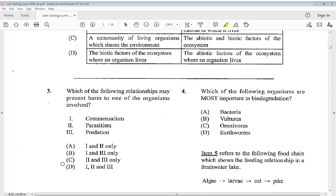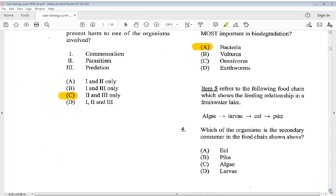Question four: which of the following organisms are most important in biodegradation? A bacteria, B vultures, C omnivores, D earthworms. We know it is A, bacteria. Item five refers to the following food chain which shows the feeding relationship in a freshwater lake: algae to larvae to eel to pike. Which organism is the secondary consumer? We know it is A, eel.